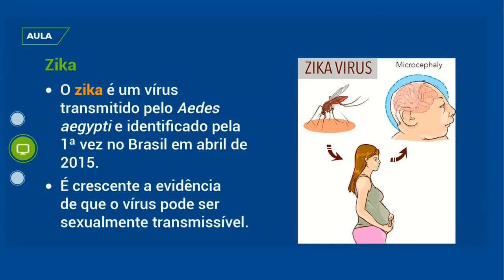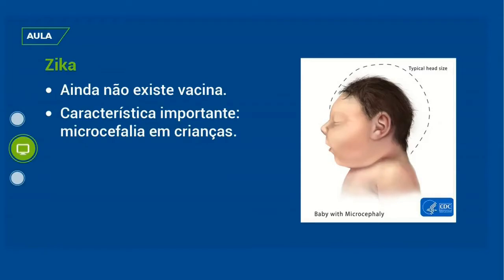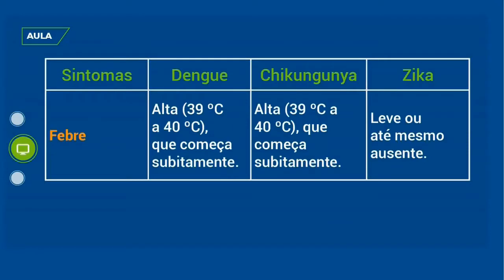Outra doença causada por vírus é a Zika — um vírus transmitido também pelo Aedes aegypti, identificado em 2015. É crescente a evidência de que esse vírus pode ser sexualmente transmissível, mas não temos total certeza. A principal consequência da Zika é quando mulheres grávidas contraem o vírus e as crianças podem nascer com microcefalia. A Zika ainda não tem vacina.